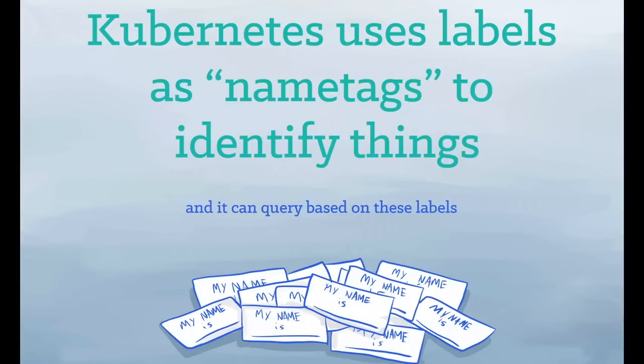Kubernetes uses labels as name tags to identify things, and it can query based on these labels. Labels are open-ended. You can use them to indicate roles, stability, or other important attributes.